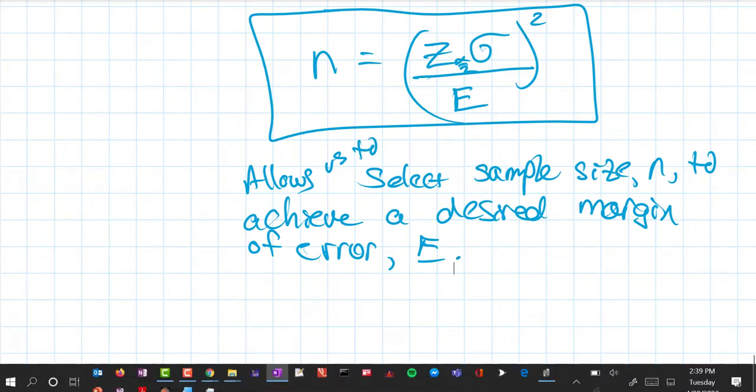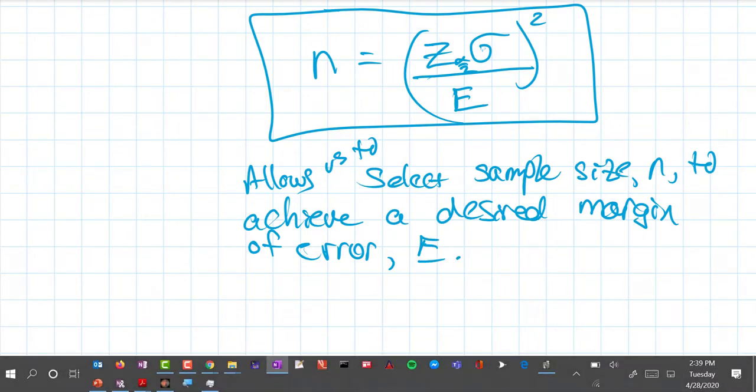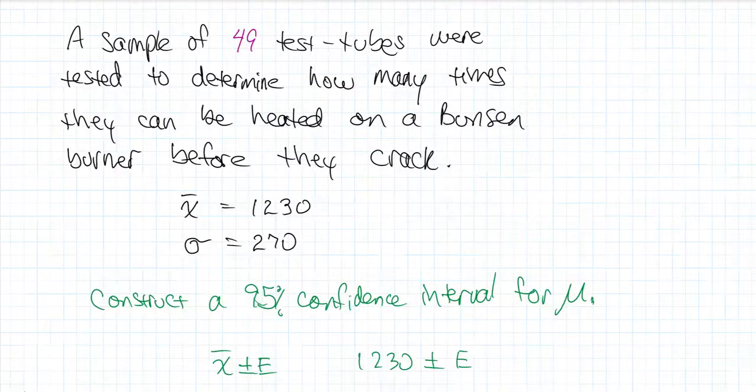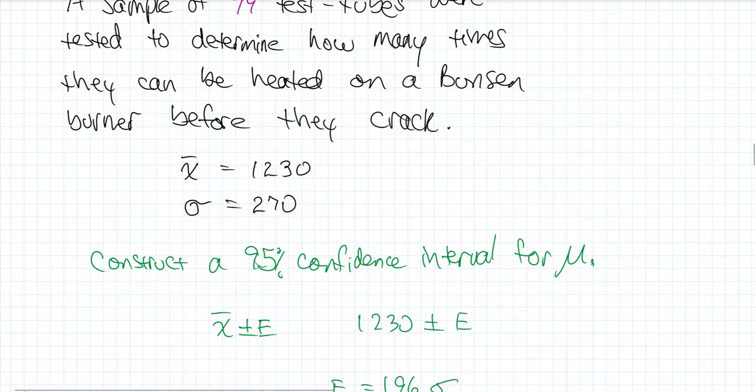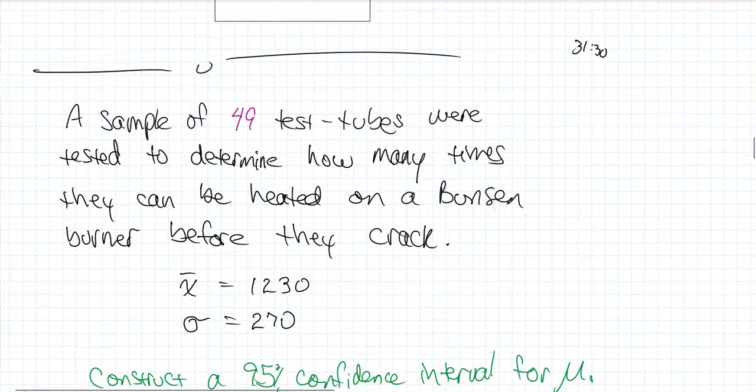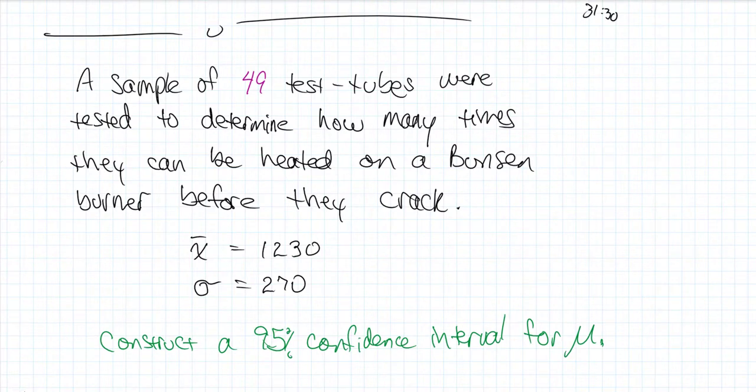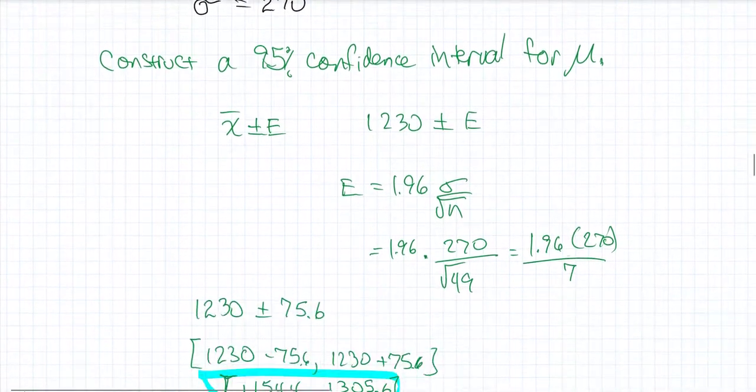So let's take a quick look at how we can use this formula. So an earlier example that we used was one where we said, here's a sample of 49 test tubes. And we're just going to determine how many times they can be heated up before they crack. And we found that on average it was 1230 times they can be heated up before they crack.